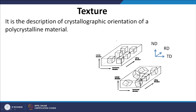As you can see in this schematic, in the first instance all the unit cells are arranged in a particular fashion — I would call that highly textured — whereas in the second case you can see that all the unit cells are randomly oriented with different orientations.